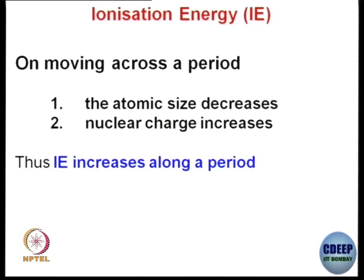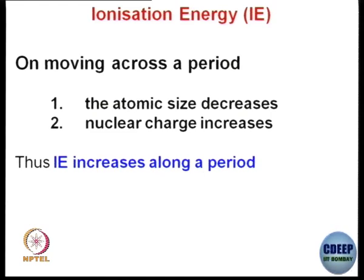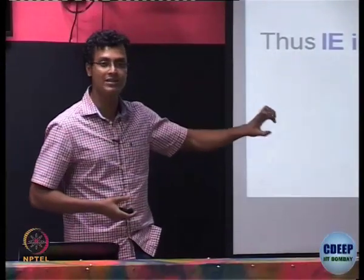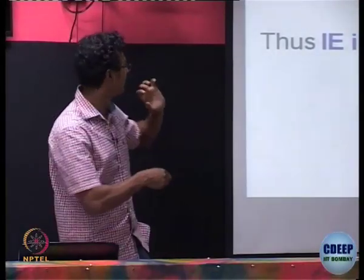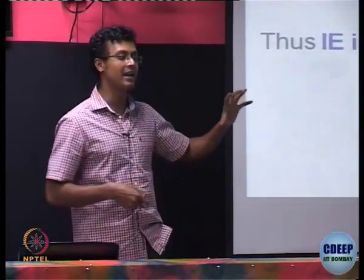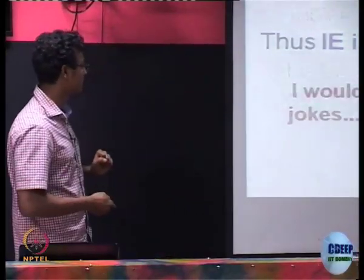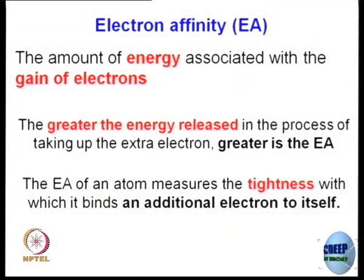Moving across a period from left to right, atomic size decreases and nuclear charge increases. Therefore, ionization energy increases along a period. Size gets smaller, nuclear charge increases, and so ionization energy increases along a period. From top to bottom, ionization energy decreases.